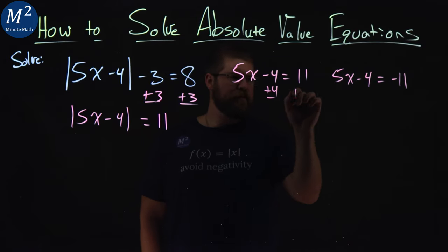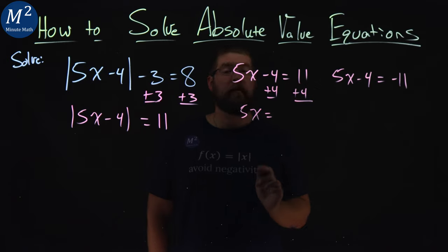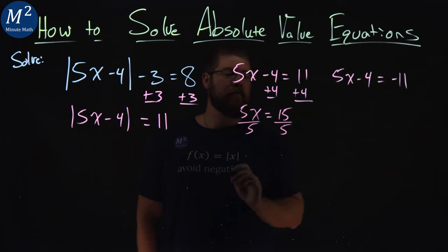I'm going to add a 4 to both sides here, and I have 5x is equal to 11 plus 4, which is 15. We divide both sides by 5, which is left here. X is by itself, and 15 divided by 5 is a good old 3.